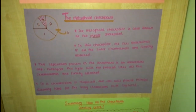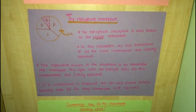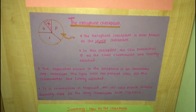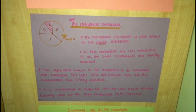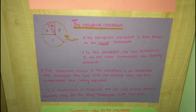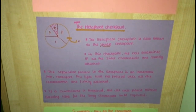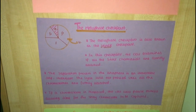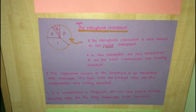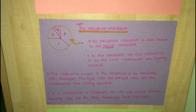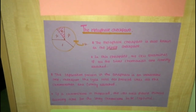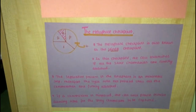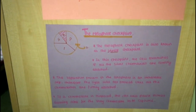Following this, we have the metaphase checkpoint, also known as the spindle checkpoint. In this checkpoint, the cell examines if all sister chromatids are correctly attached. The separation process in the anaphase is an irreversible step. Therefore, the cycle will not proceed until all the chromosomes are firmly attached. If a chromosome is misplaced, the cell will pause mitosis, allowing time for the stray chromosome to be captured.